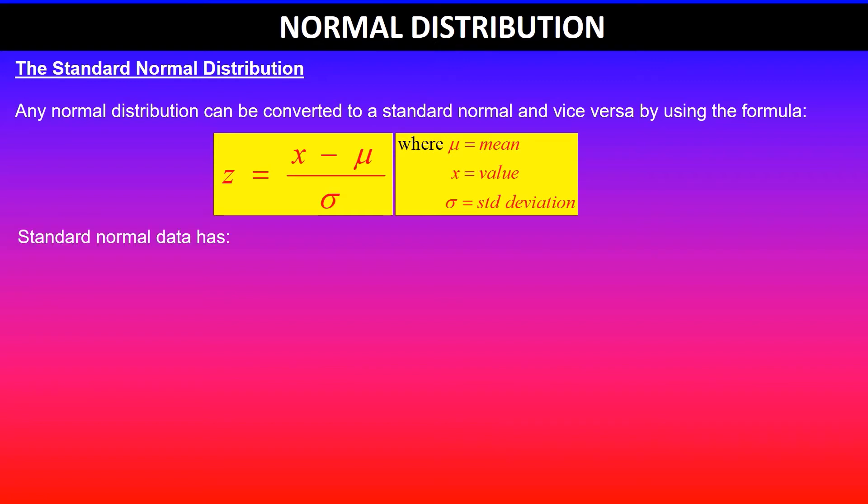The standard normal data will have a mean of 0 and standard deviation of 1. And this formula gives us the z value and it is the number of standard deviations the x value is from the mean.